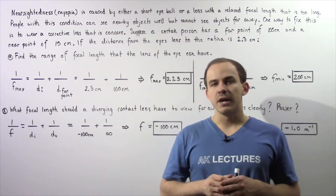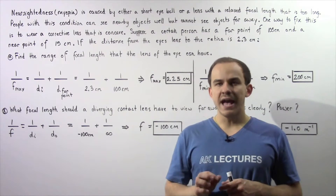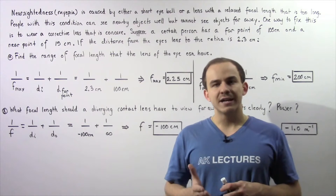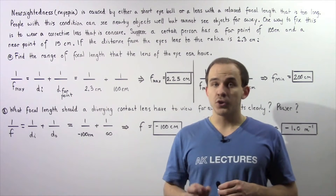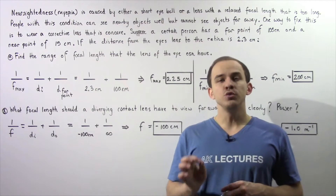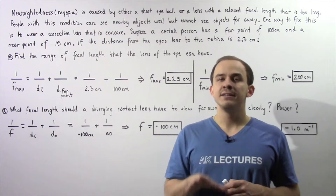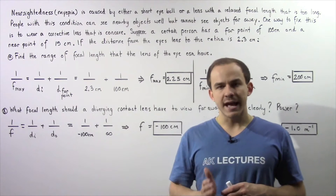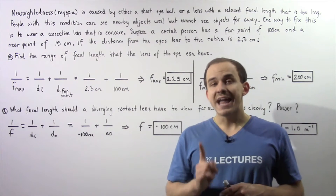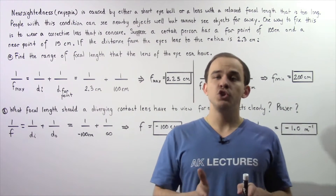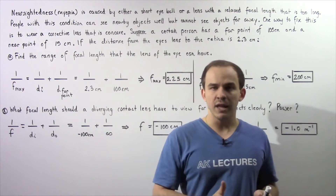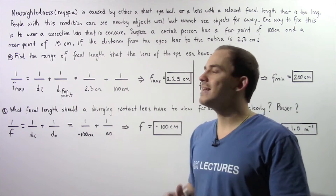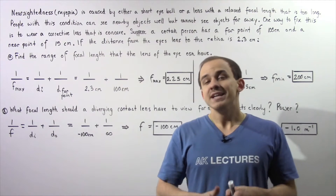In the previous lecture, we examined how we can use a convex or converging corrective lens to fix a condition of the eye known as farsightedness. Now let's examine how we can use corrective lenses to fix a condition known as nearsightedness.